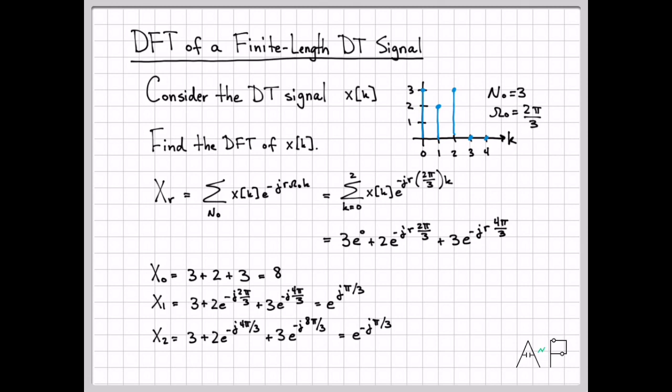So by hand, I've easily been able to compute the three values of the DTFT spectrum. And the values are this, this, and this, corresponding to frequencies of omega equals 0, omega equals 2 pi over 3, and omega equals 2 times 2 pi over 3. Right? That's how we're sampling in the frequency domain.